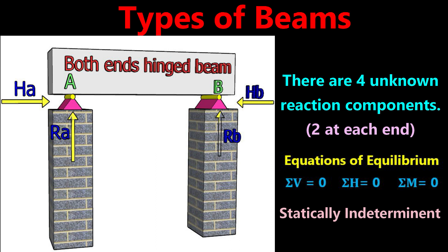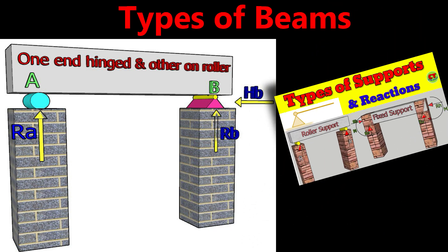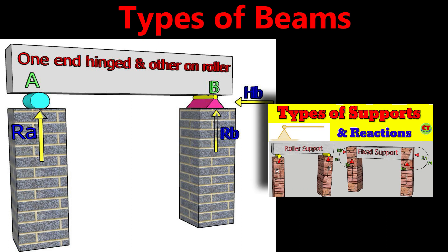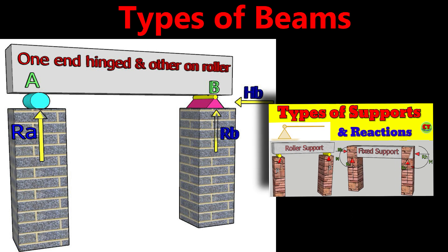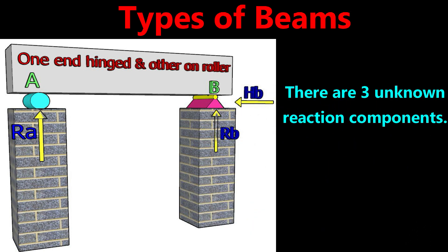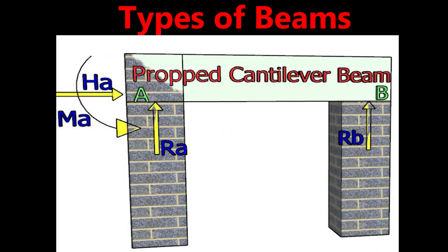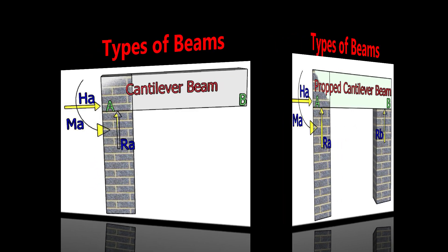The next type is the one end hinged and other end on roller beam. One end is on a hinged support and the other end is on a roller support. At the hinged support there are two unknown reaction components in mutually perpendicular directions, and at the roller support there is one unknown reaction component normal to the support — giving three total unknown reaction components. These can be determined using equilibrium equations. This type is seen in bridge constructions.